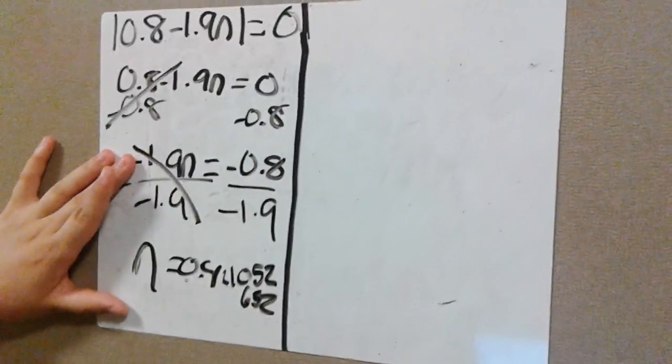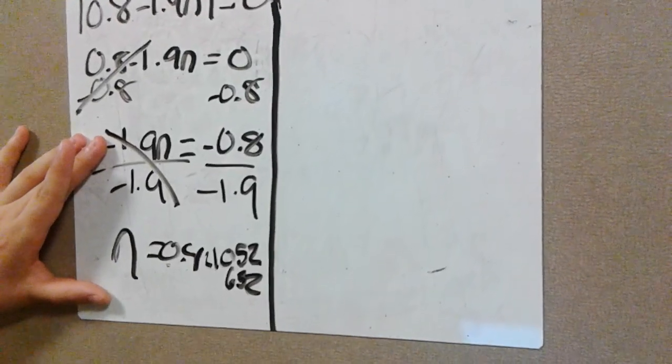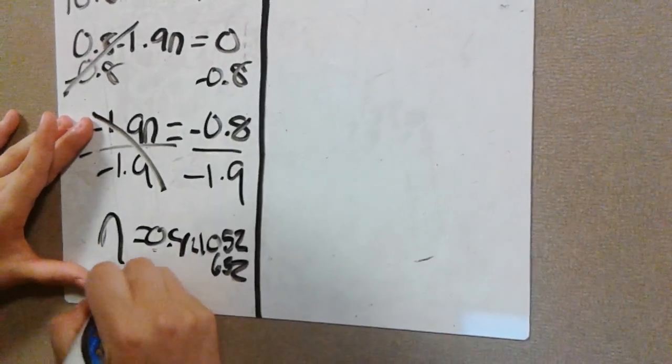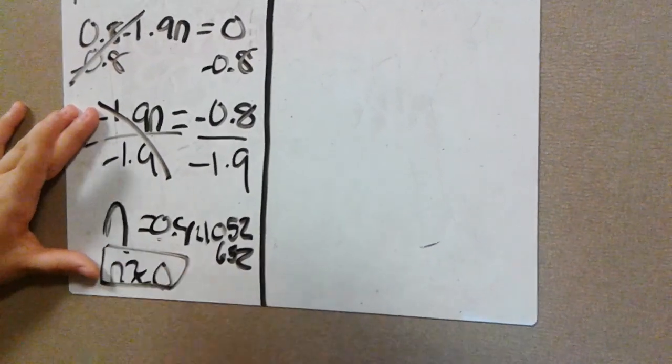And that is the value of n. But if you want to round, n would be approximately equal to 0. So that would be your answer.